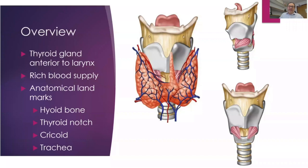Anatomical landmarks are very important — you need to be able to palpate the neck, especially in an emergency situation. The landmarks you will identify are the hyoid bone, thyrohyoid membrane, thyroid notch, and thyroid laminae.